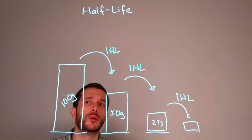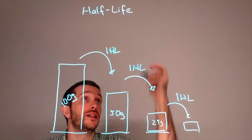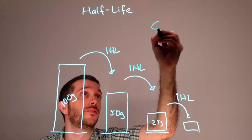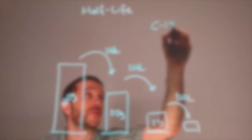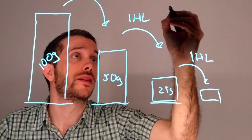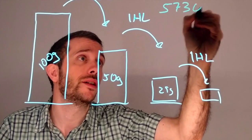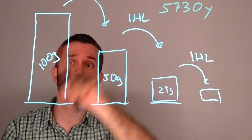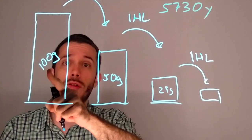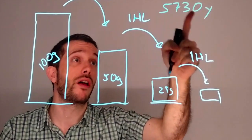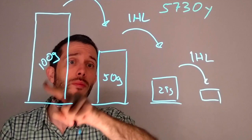One isotope you probably have heard of is C14. Its half-life is 5730 years. So, if I start with 100 grams of C14 after 5730 years, down to 50,